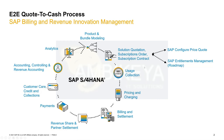In addition, we have integration into SAP Configure Price Quote, and as a roadmap item we are also looking into integrations for SAP Entitlements Management — this is still not live but is on the roadmap. Subscription Order Management is also closely integrated with Convergent Charging, Convergent Invoicing, and FICA.